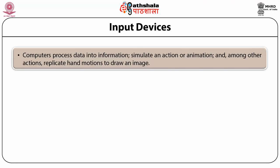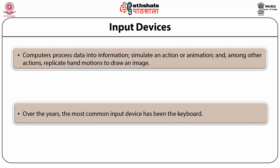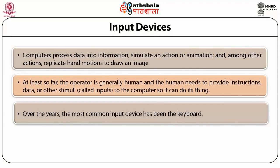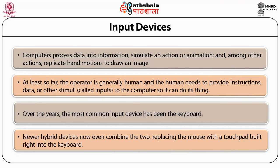Computer processes data into information, simulates actions or animations, and replicates hand motion to draw an image. Each of these processes requires interaction with an operator. Operators — generally humans — must provide instructions, data, and other stimuli called inputs to the computer. The most commonly used input device has been the keyboard, though in recent years the mouse has been equally prevalent. Newly hybrid devices now combine the two, replacing the mouse with a touchpad built into the keyboard.